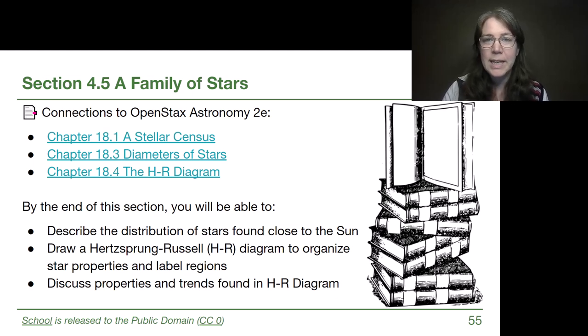Welcome back to module four. In this section we're going to be introducing a diagram that astronomers use to track different trends in stellar properties that is going to be really essential to our understanding as we head into the evolution of stars in module five. So that's going to be our big focus of this section where we're following part of chapter 18 in OpenStax astronomy.